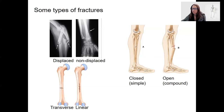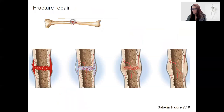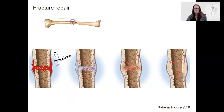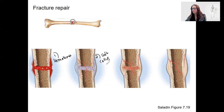When fractures occur, your body is going to heal. First, we're going to have a hematoma — that is a blood clot — bleeding occurs to form a hematoma. Then rapid cell division occurs to form a soft callus. The soft callus is made of cells that divide and form collagen fibers as well as some cartilage — specifically fibrocartilage.